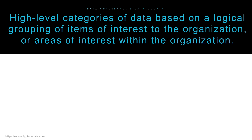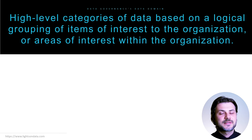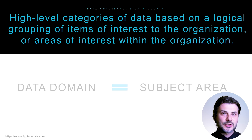Now let's look at the data governance data domain, which is a logical grouping of items of interest to the organization, or areas of interest within the organization. Data domains are high-level categories of data for the purpose of assigning accountability and responsibility for that data. The data domain is also called the subject area, so you might encounter either term. Let's take a look at some data domain examples.